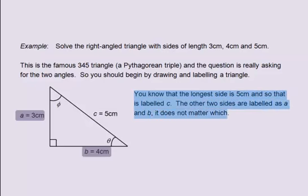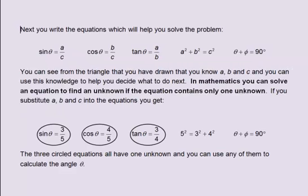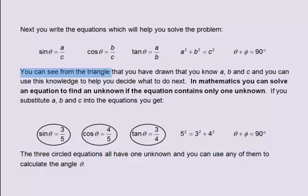It does not matter which. The two unknown angles are labelled as theta and phi. Next, you write the equations which will help you solve the problem: sine theta equals a divided by c; cosine theta equals b divided by c; tangent theta equals a divided by b; a squared plus b squared equals c squared; theta plus phi equals 90 degrees. You can see from the triangle that you have drawn that you know a, b and c, and you can use this knowledge to help you decide what to do next.